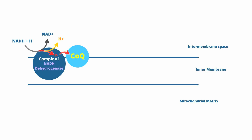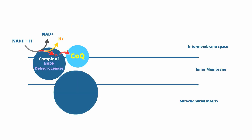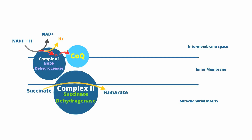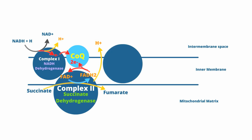An alternate name for coenzyme Q is ubiquinone. The importance of coenzyme Q is that not only does it accept electrons from NADH dehydrogenase complex, otherwise known as complex 1, but it can also accept electrons from complex 2. Complex 2 is also called succinate dehydrogenase, or succinate ubiquinone oxyreductase. Succinate is one of the intermediate products in the citric acid cycle. Succinate dehydrogenase acts on succinate to create fumarate, and in the process an FAD molecule is reduced to FADH2. FADH2 passes its electrons to coenzyme Q, which then passes these electrons to complex 3.